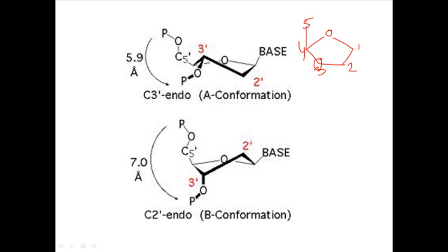If we hold the C3 carbon position and pull it upward, it makes a particular structure. In this case, all the rest of the sugar atoms remain in one plane, but the three carbon position is slightly tilted upward. This C3 position attaches via phosphate to the next sugar, which points downward.